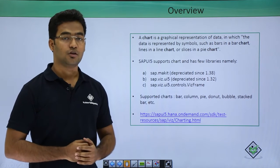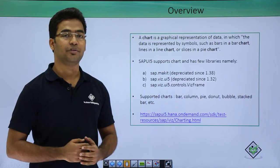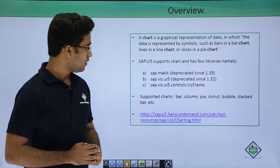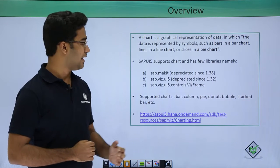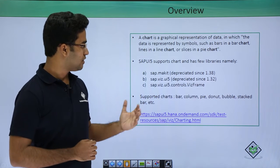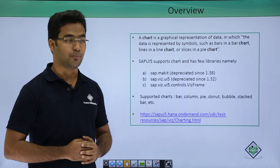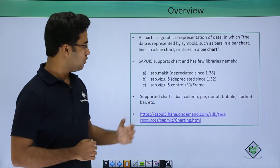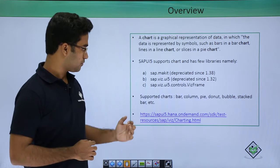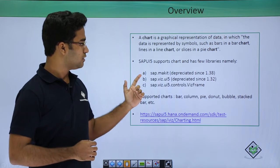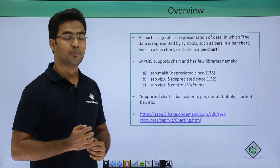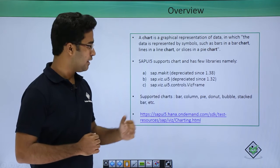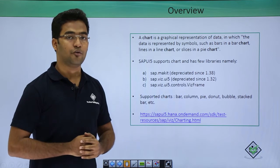A chart is a basic graphical representation of data in the form of symbols such as bars in a bar chart or slices in a pie chart. SAPUI5 supports charts and has a few libraries like sap.makit, sap.viz.ui5, and sap.viz.ui5.controls.vizframe. The first two are deprecated since versions 1.38 and 1.32. Currently we use vizframe charts, but we will also cover sap.viz.ui5 charts to understand the basic concept, and afterwards I will explain the example on vizframe charts as well.